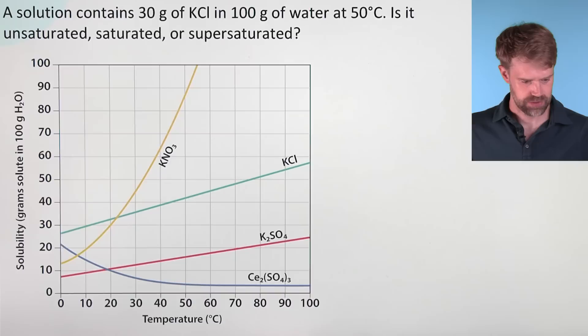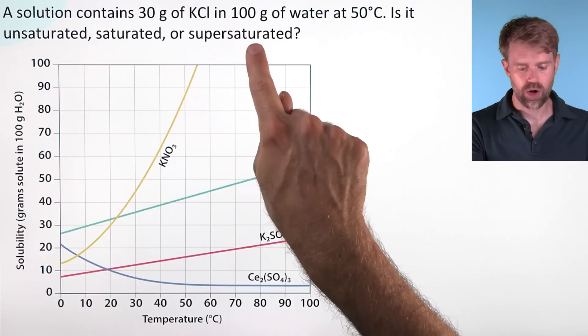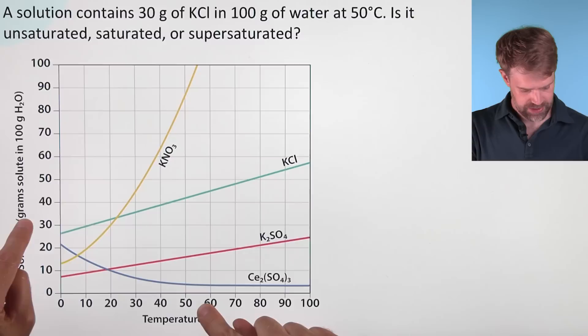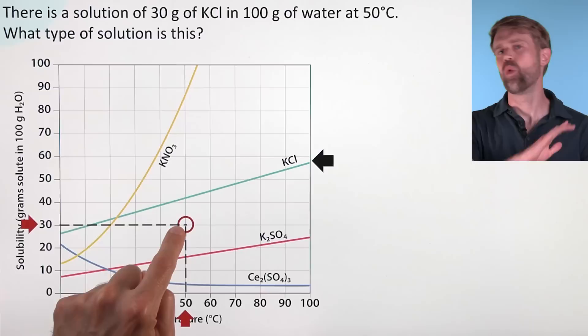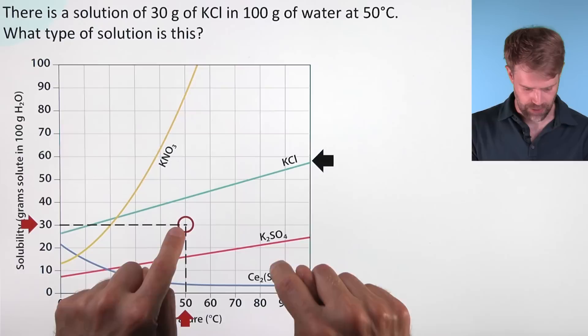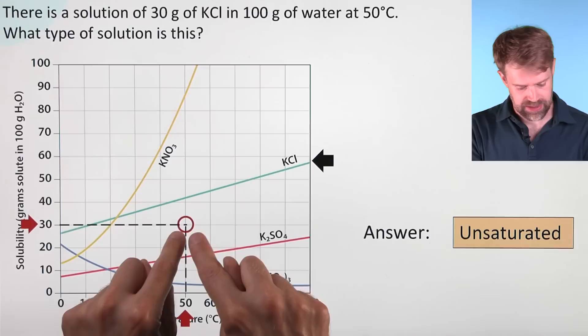A solution contains 30 grams of KCl in 100 grams of water at 50 degrees. Is it unsaturated, saturated, or supersaturated? First, let's find this point on the graph — 30 grams solubility and 50 degrees temperature. We find the intersection point and pay attention to the KCl line. When doing problems like this, make sure you're looking at the right line for the chemical you're asked about. This point is beneath the KCl line, meaning it's lower than the maximum. So this represents an unsaturated solution.